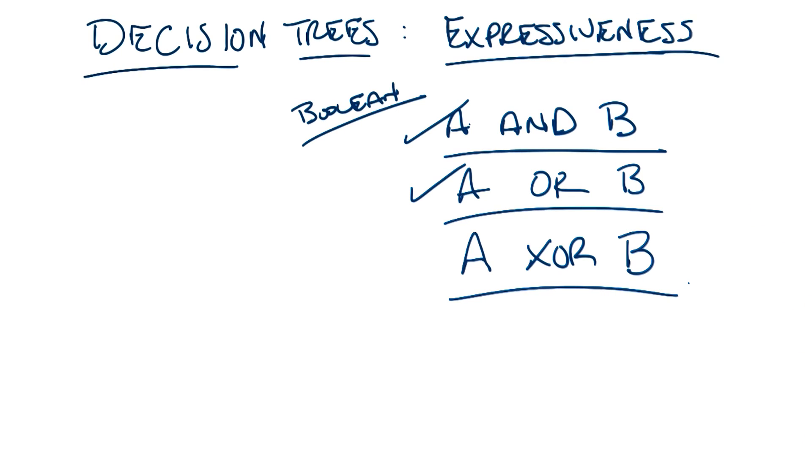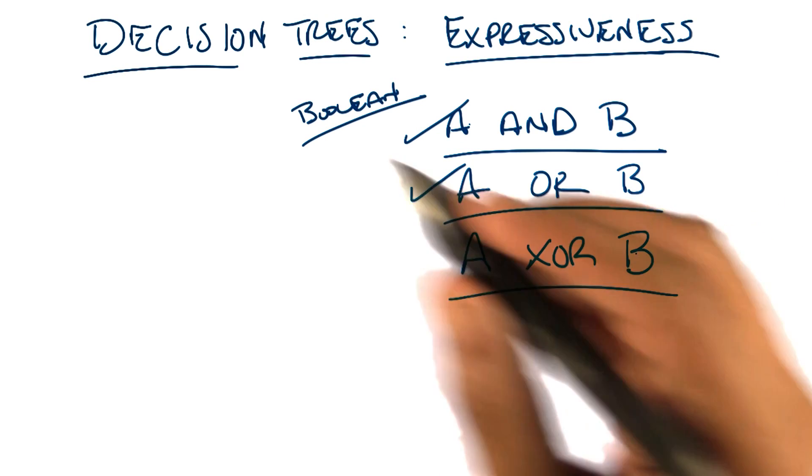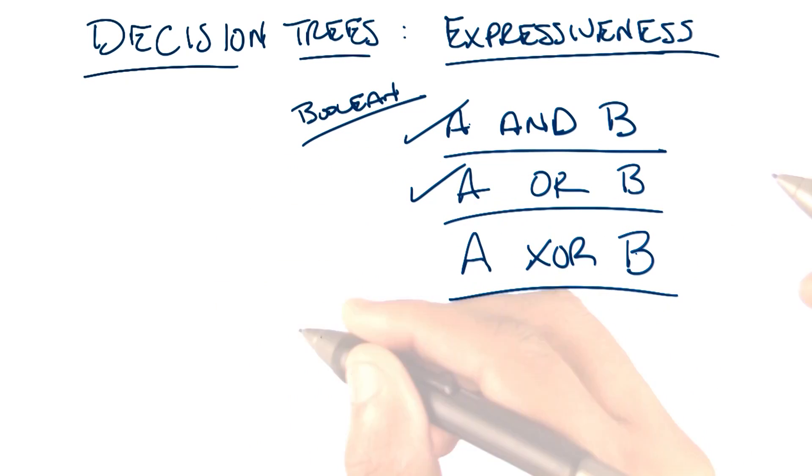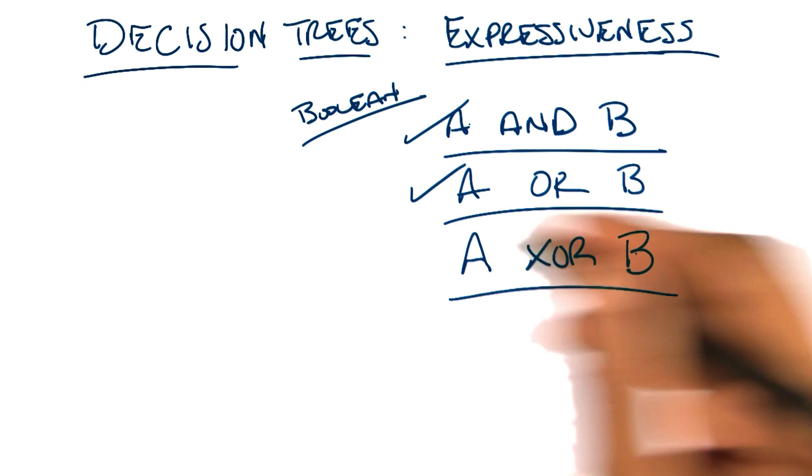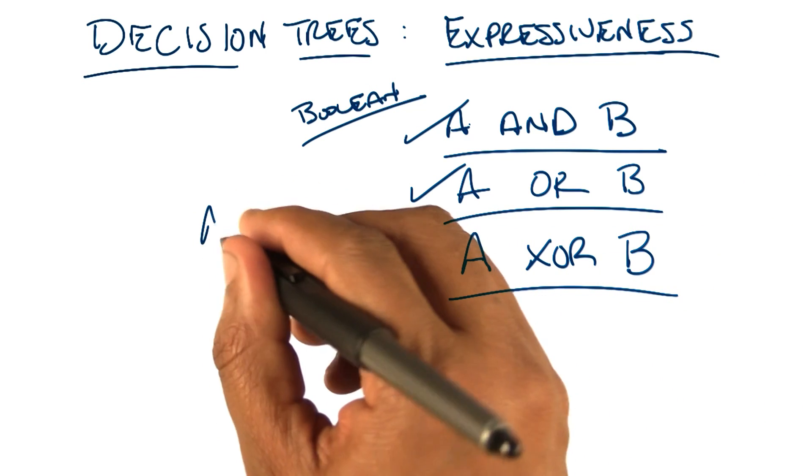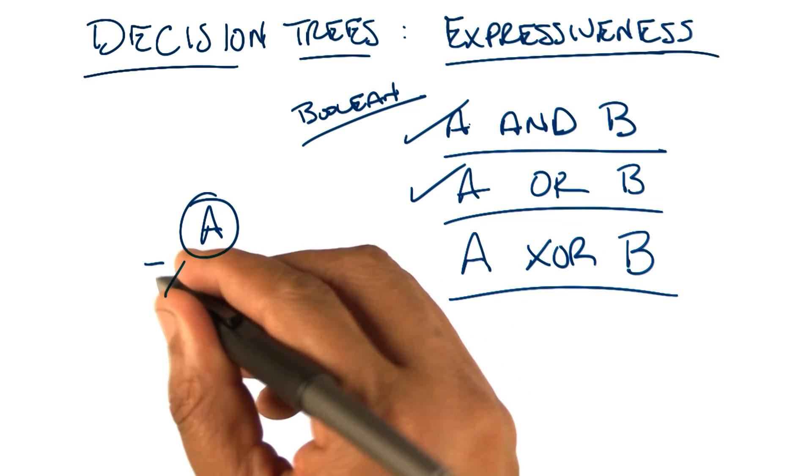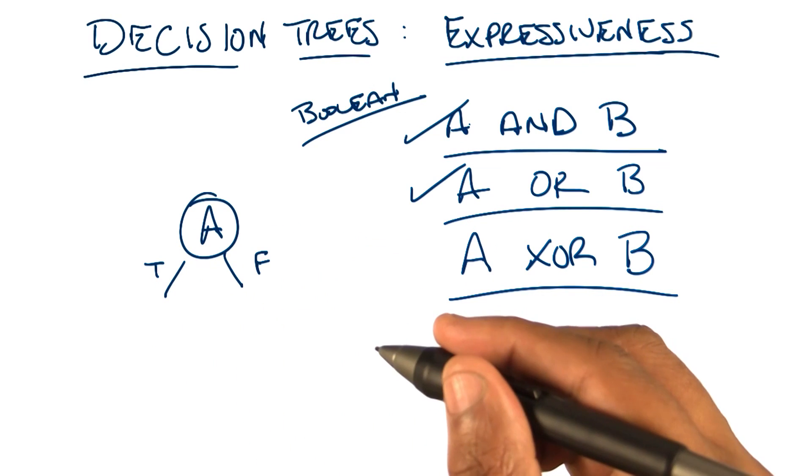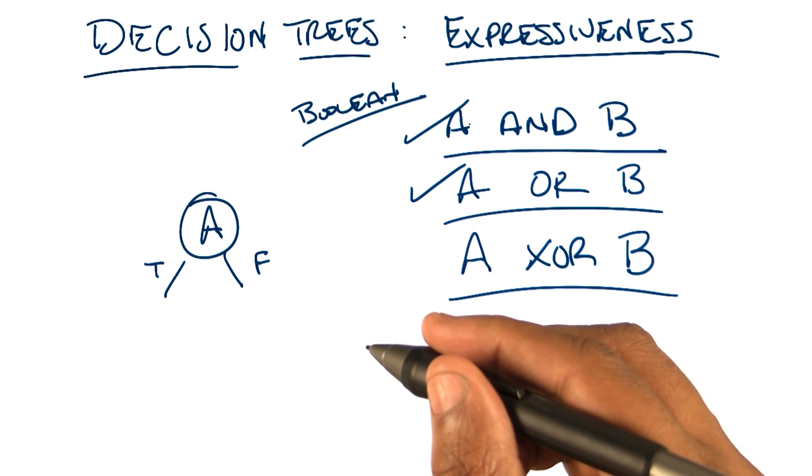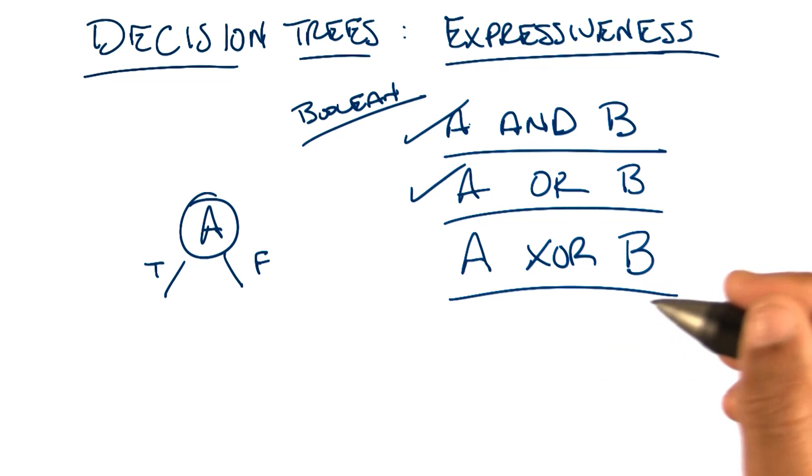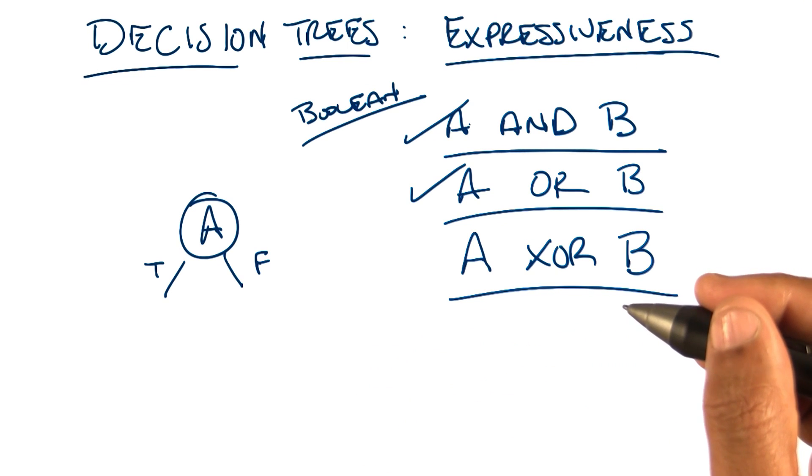So how would you do XOR? We still have our two attributes A and B. Well, I would start with the OR, because it's a lot like OR. Okay, so to do XOR, we can split on A. And there's a true branch and a false branch. And what happened with AND and OR at this point is there is at least one branch where we actually knew the answer at this point. But I don't think that's true here.